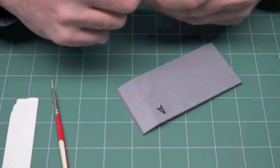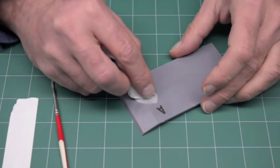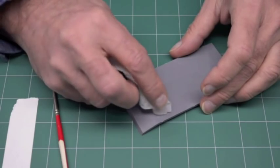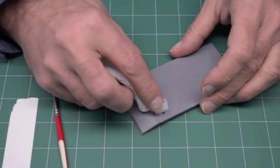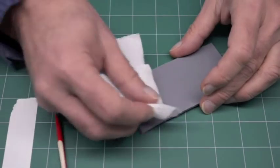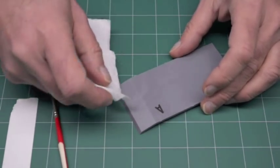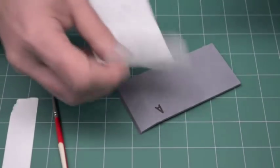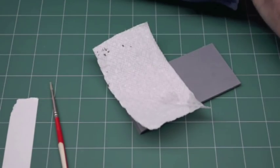Don't push down on it while you're positioning it, because the adhesive on the dry transfer will grab the model. Take a paper towel, blot up the water, and you might want to lay the paper towel down on top of it.